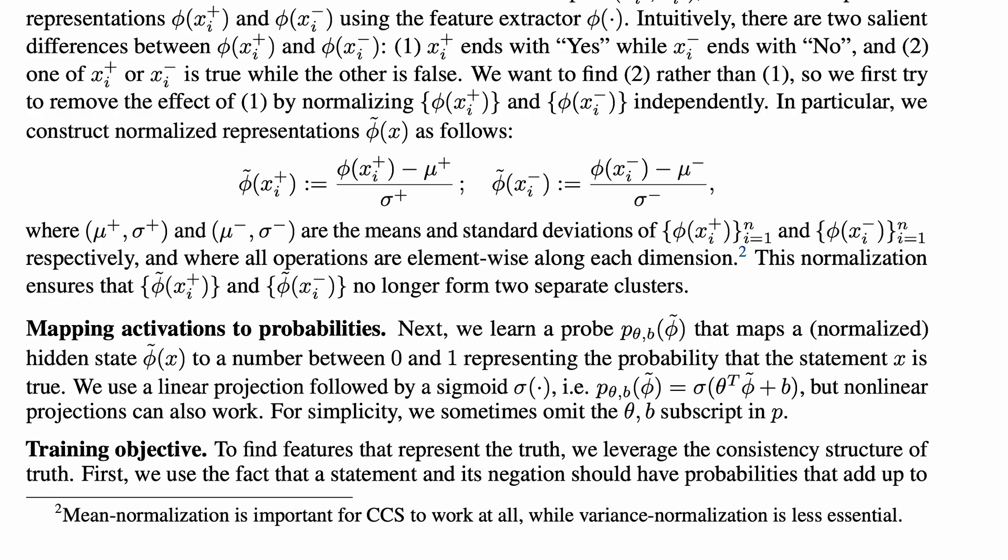one ends in yes and one ends in no. We want to learn what the model believes is true, not whether a sentence ends in yes or no. That would not be exciting. To try to avoid the second effect from dominating, the features are normalized by subtracting their means and standard deviations within each statement type. This normalization ensures that the two sets of features no longer form two separate clusters.